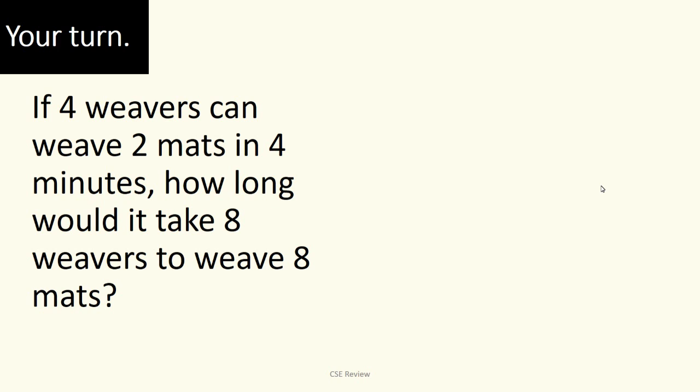All right, let's see how you did. You have: if four weavers can weave two mats in four minutes, how long would it take eight weavers to weave eight mats? First, let's find what's given in the final situation. You have eight weavers times the pace (which is missing, we'll find it) to weave eight mats. What we're looking for is the time—this becomes your x. Question number one: find the pace. What's the rate of their work?